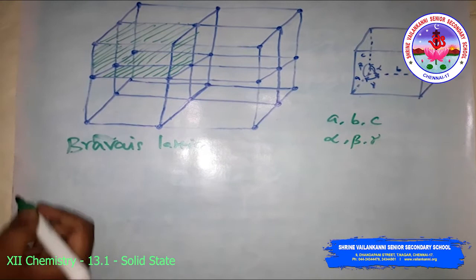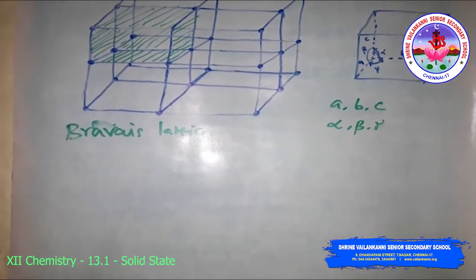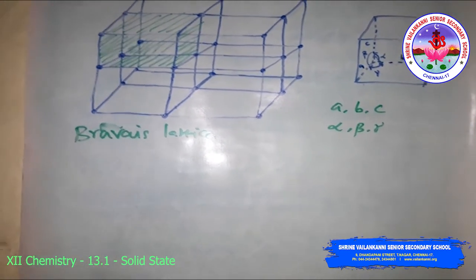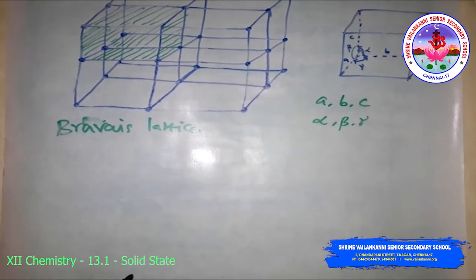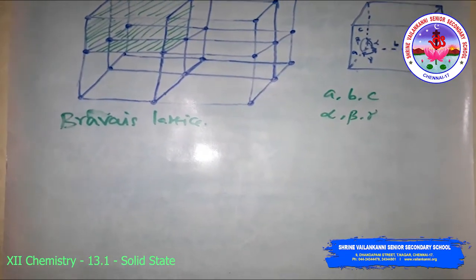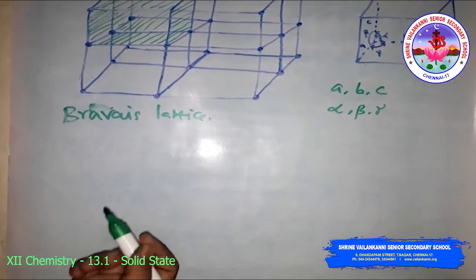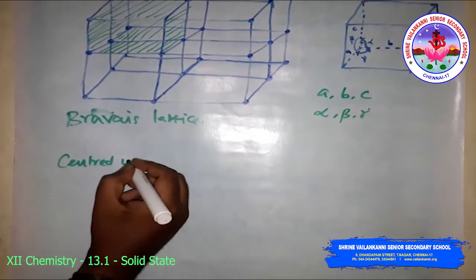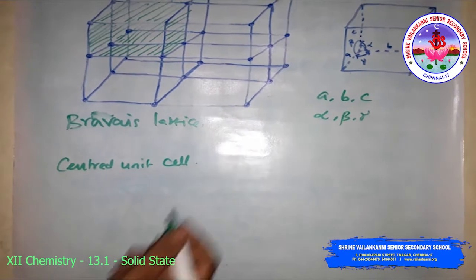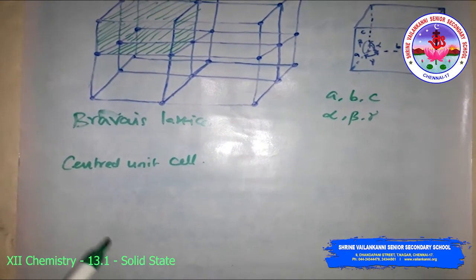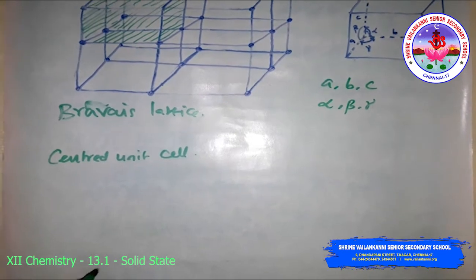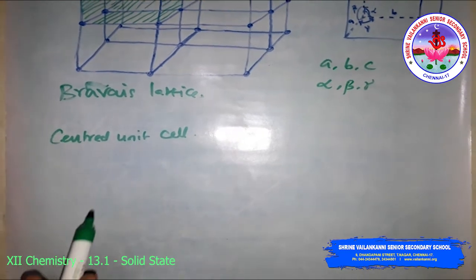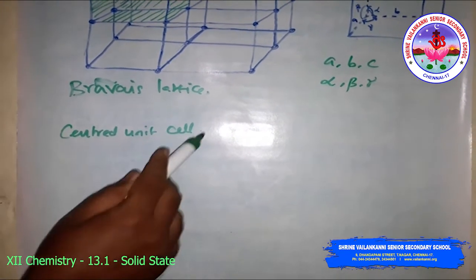There are primitive and centered unit cells. In a primitive unit cell, constituent particles are present only at the corner positions. In a centered unit cell, one or more constituent particles are present at positions other than the corners, in addition to those at the corners.